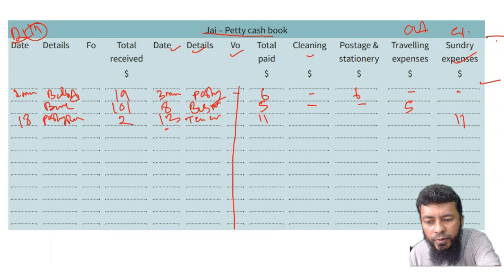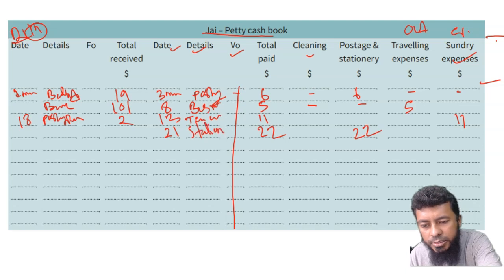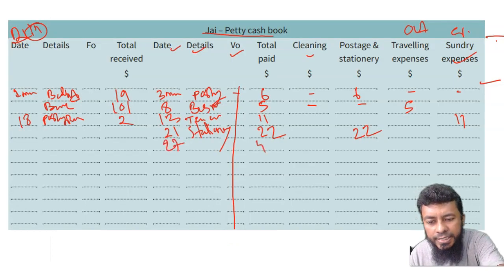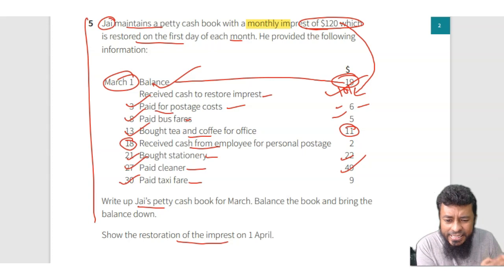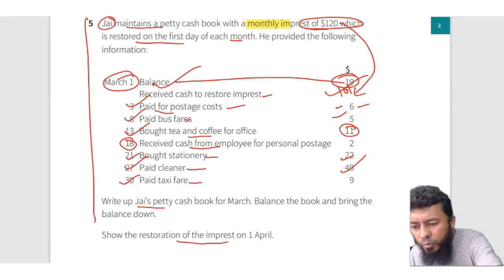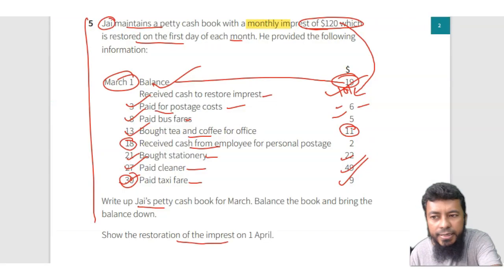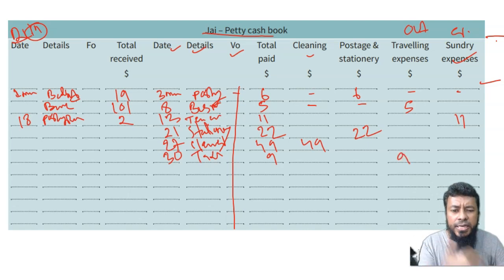21st of March, bought stationery for 22 dollars — entered in the postage and stationery column. Then 27th of March, paid cleaner 49 dollars — entered in the cleaning column. Finally, 30th of March, paid taxi fare 9 dollars — entered in the traveling expenses column. So traveling expenses appeared twice — bus fare and taxi — that's fine. Now let's do the totals.